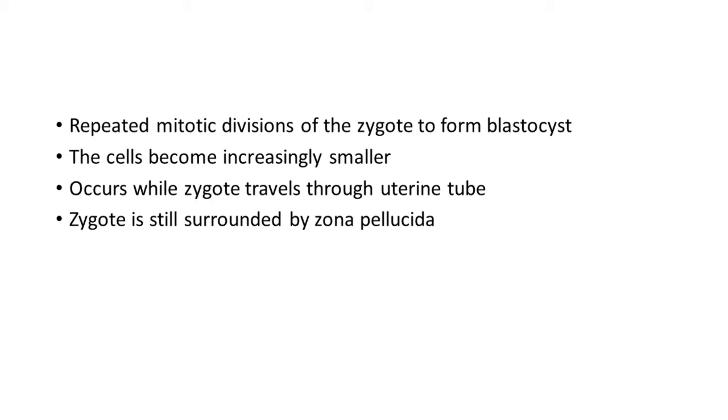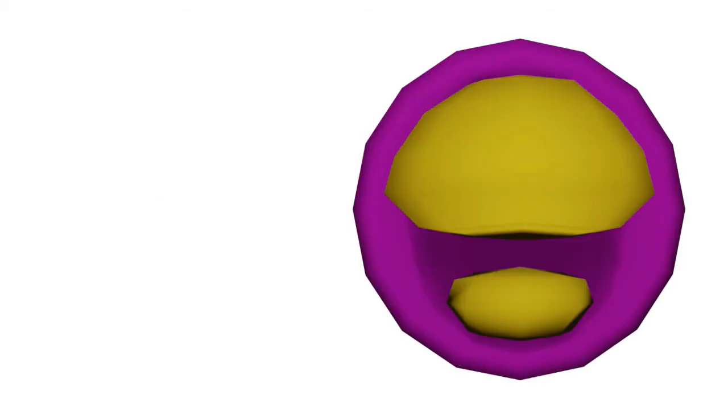During cleavage, due to this repeated mitotic divisions, the cells become increasingly smaller, and this occurs while the zygote is still within the uterine tube, traveling towards the uterus. And remember, the zygote is still surrounded by zona pellucida.